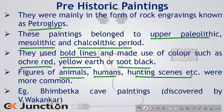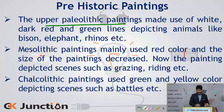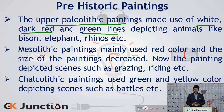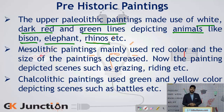The most famous example of these prehistoric paintings is the Bhimbetka cave paintings, which were discovered by V.S. Wakankar. The upper Paleolithic paintings made use of white, dark red, and green lines, and with those colours they depicted themes such as larger animals like bison, elephant, rhinos, etc. So in the upper Paleolithic period, everything was on a larger scale.